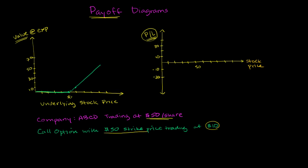And so you have a payoff diagram that looks something like this. It kind of hockey sticks. Below $50, it's worthless. And then above $50, all of a sudden, it becomes worth something.